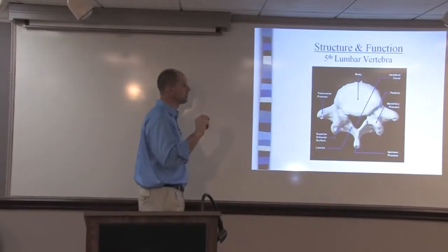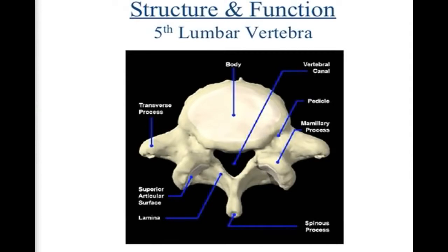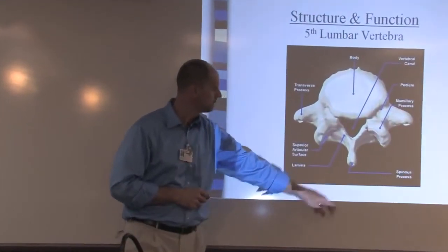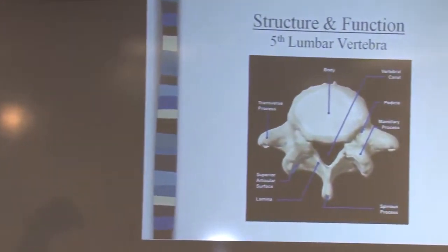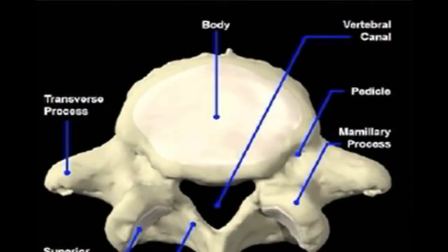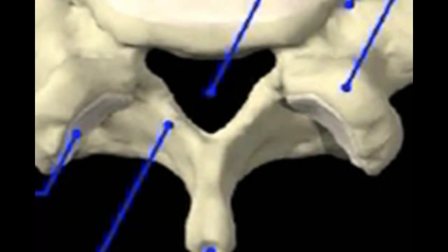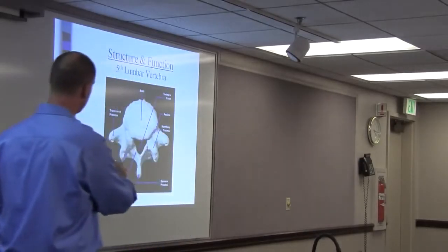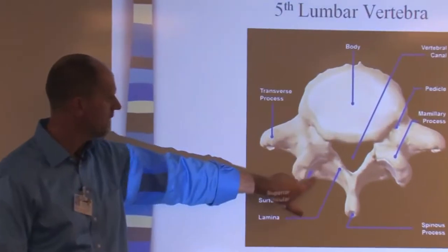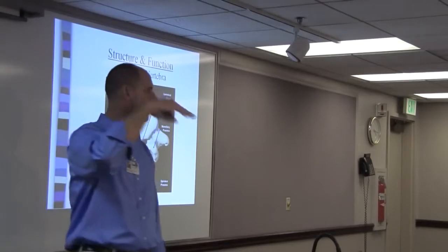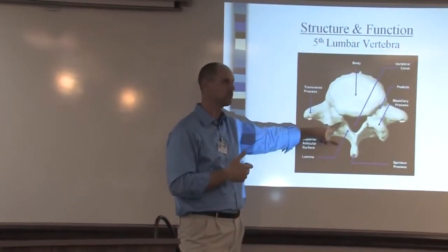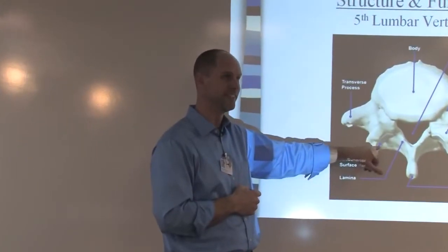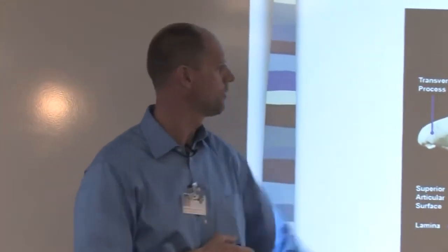Let's look specifically at one vertebra — the fifth — from the top down. This is the front of your body, this is the back. This large area called the body is where the disc sits on top of the vertebra, and then another vertebra on top of it. This large opening is for the spinal cord as it comes down from the brain. On each side you have a joint — not unlike a knee joint or a finger joint. And what happens to joints as we get older? Arthritis.